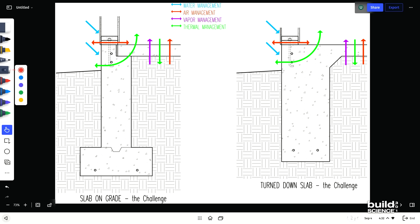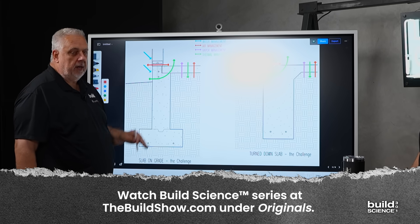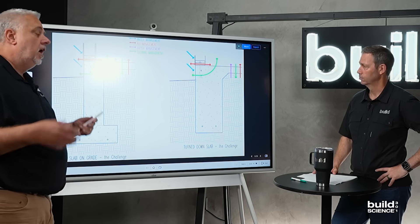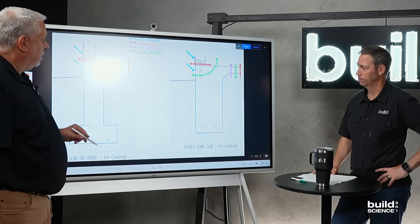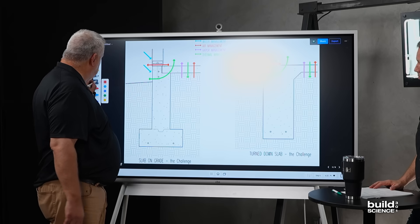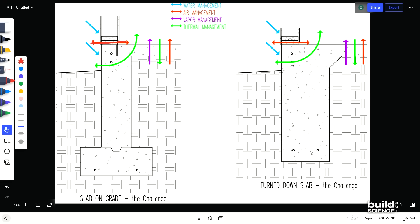So every detail has a challenge, right? Water management, air management, vapor management, and thermal management. If you remember from Build Science 101, where we talked about the control layers and talked about each one of those specifically, you'll have a really good knowledge of what we're talking about here.